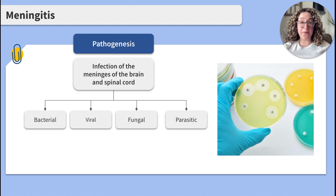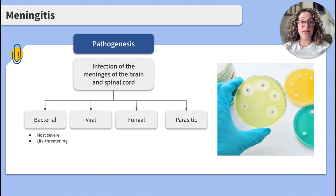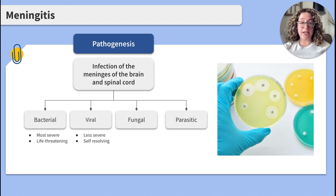Bacterial and viral meningitis are the most common types. Bacterial meningitis is the most severe and can be life-threatening if not treated quickly. It can spread rapidly, causing hearing loss, brain damage, and even death. Viral meningitis is less severe and typically resolves on its own without specific treatment. Most cases of viral meningitis are mild, but severe cases can occur, especially in clients with an already weakened immune system.